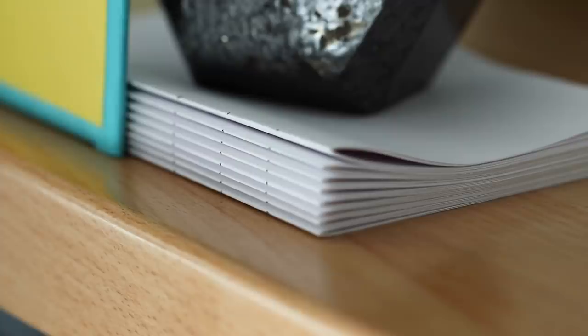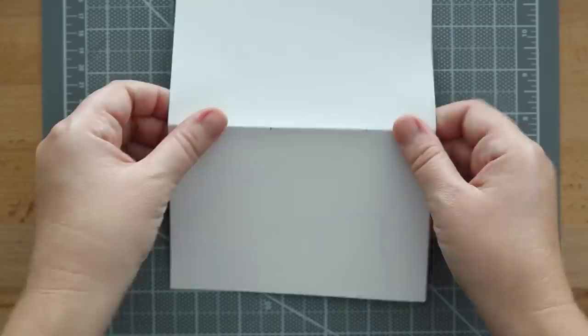Now I'm going to pierce through each one of those signatures with an awl on those marks that I made, making sure to keep all of the signatures in the same order as I marked them.